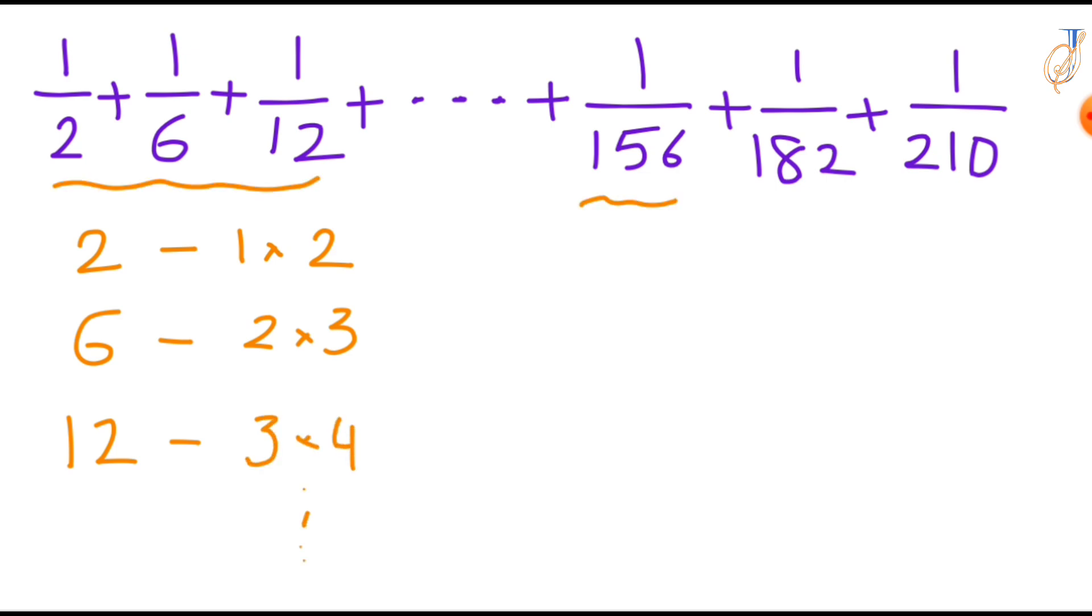First three term denominators are products of consecutive integers, isn't it? So what about the last three terms?